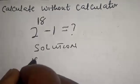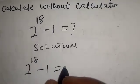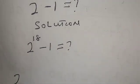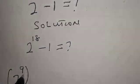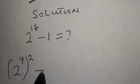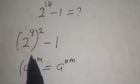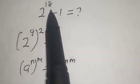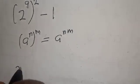2 raised to power 18 minus 1 is equal to what. Now, 2 raised to power 18 is the same thing as 2 raised to power 9, raised to power 2. This uses the rule: a raised to power n, raised to power m equals a raised to power n×m. Multiplying 9 times 2 gives you 18 back.